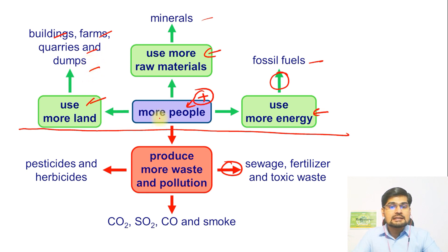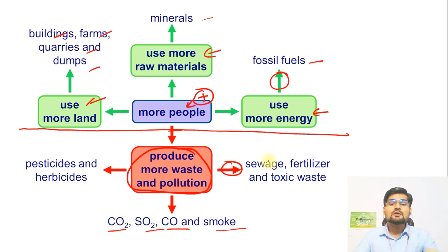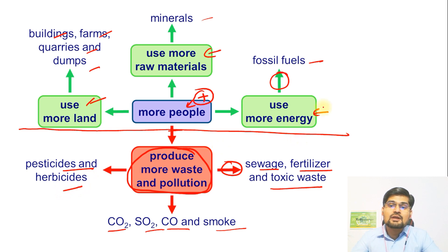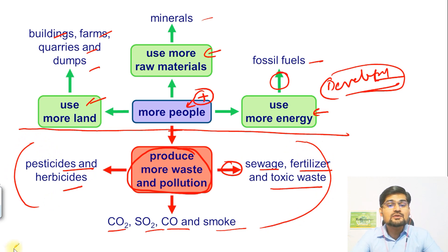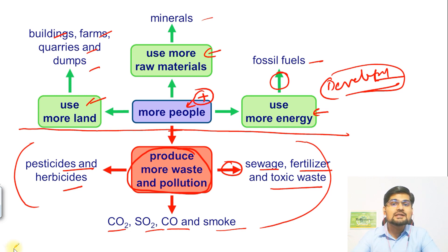Then the next part of the flow diagram shows that we produce more and more waste and more and more pollution — carbon dioxide, sulfur dioxide, carbon monoxide, smoke. We also produce sewage, fertilizer runoff, toxic waste, pesticides and herbicides. This is the fallout of development. In the process of development, we are generating these collateral impacts, which must be addressed — because if we don't, they will always pose a threat to our own existence, as the entire world has seen with the pandemic, where healthcare systems and environmental systems are interlinked.